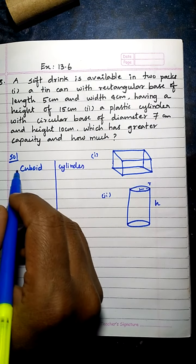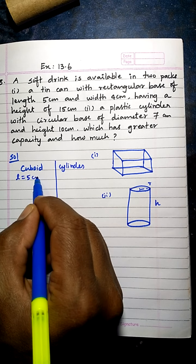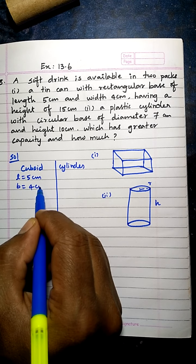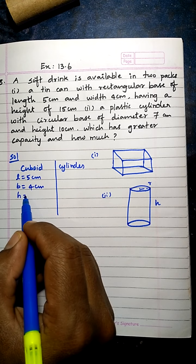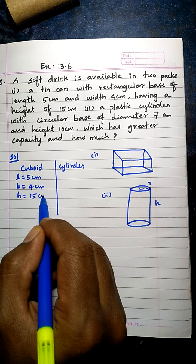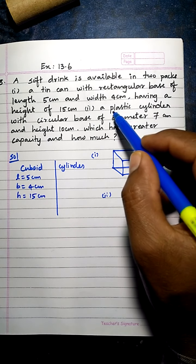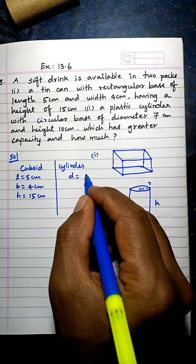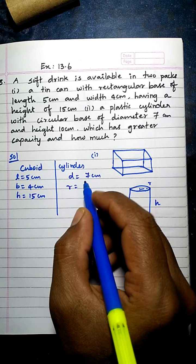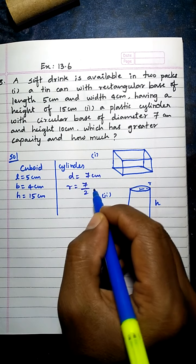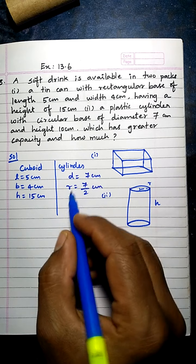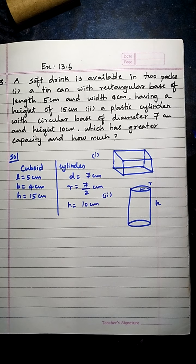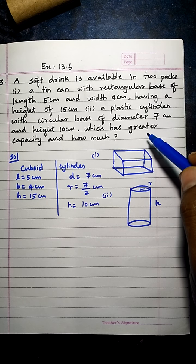Let's take all the given data. For the cuboid: length L = 5 cm, width (breadth) = 4 cm, and height H = 15 cm. For the plastic cylinder with circular base: diameter D = 7 cm, so radius R = 7/2 cm, and height H = 10 cm.